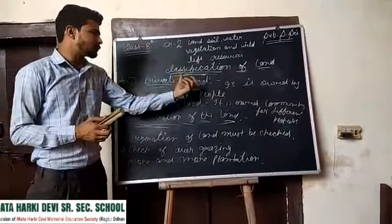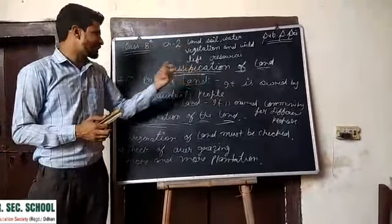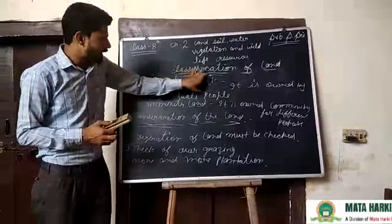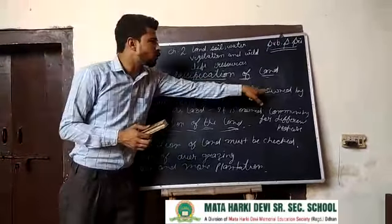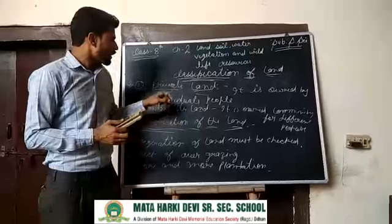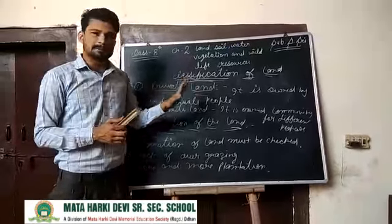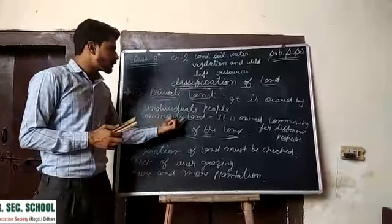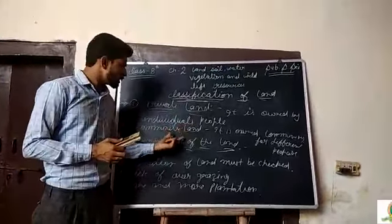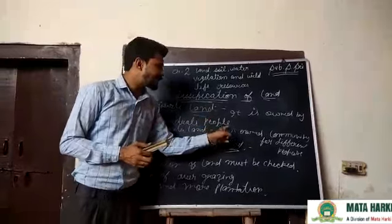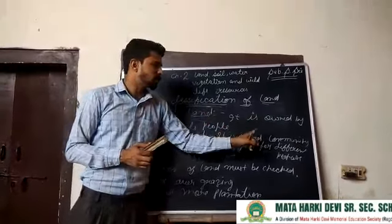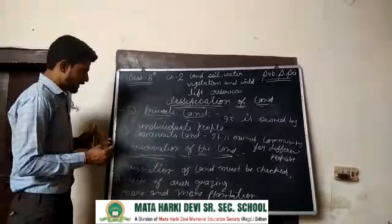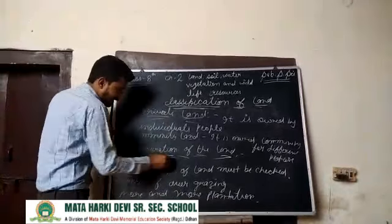There are two types of land classification. First is private land — private land is owned by individual people. Second one is community land, which is owned by the community for different purposes.